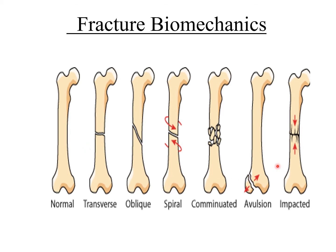These fracture types are caused by specific forces. Spiral fractures are caused by torsional force; oblique fractures are also caused by torsional force; comminuted fractures result from compressive forces; avulsion fractures occur due to tension forces; and impacted fractures are caused by tension or compressive forces.